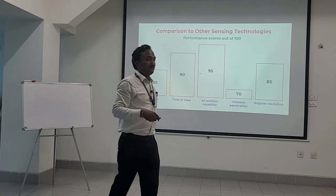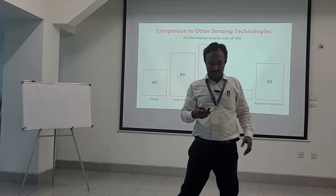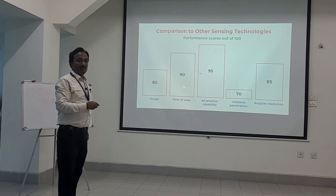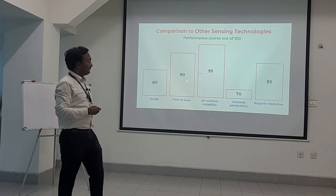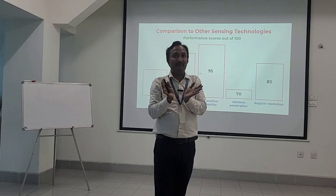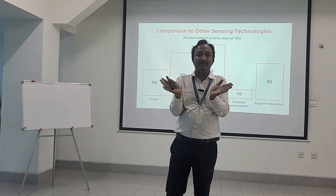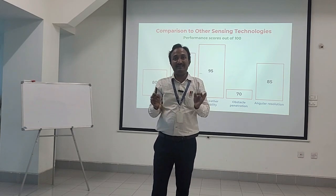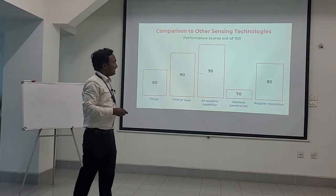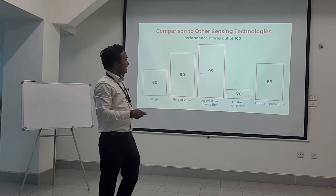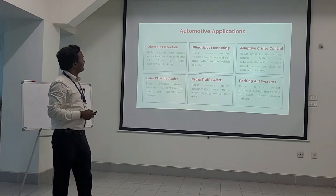Let us compare this to other sensing technologies with performance scores out of 100. In case of range, it scores 80. It scores 90 out of 100 for field of view, because the millimeter wave radar sensor has a field of view of 140 degrees — any object within that range can be detected for range, velocity, and angle of arrival. With all-weather capability it scores 95. With obstacle penetration it scores 70. With angular resolution it scores 85.